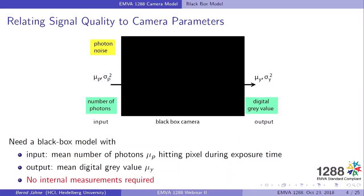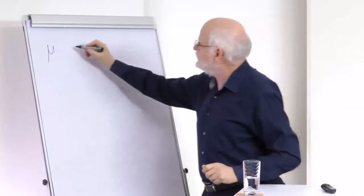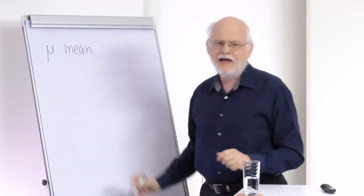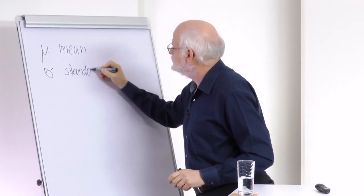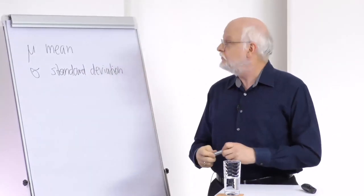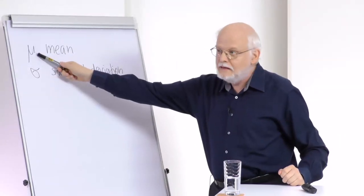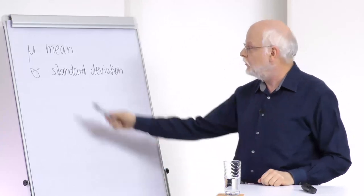Without knowing anything about what is going on inside the camera, we can measure the output signal. Here I have two symbols to explain. We have the Greek symbol Mu, which means a mean value, and we have the symbol Sigma which means the standard deviation. These are both important because we measure a mean signal, but we also measure how this signal is fluctuating — for instance by temporal noise or by inhomogeneities.